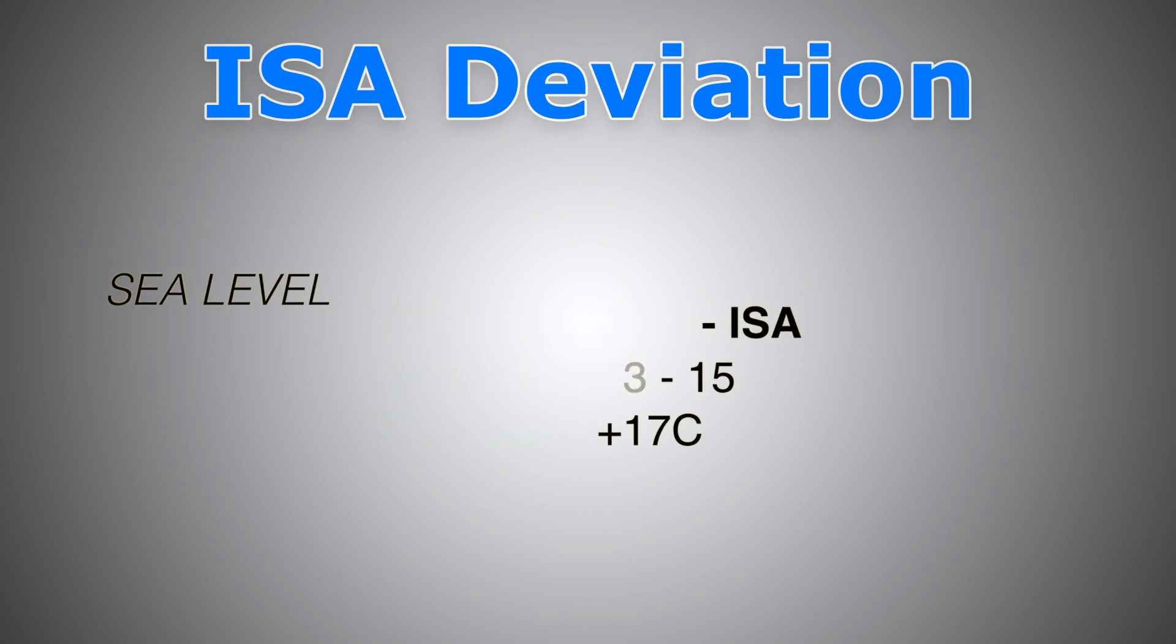Let's look at another example. Say for example, we have an outside air temperature of 10 degrees at an elevation of 2000 feet. Say for example, we are at an airport or an airfield with an elevation of 2000 feet. So let's calculate our ISA deviation.